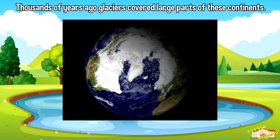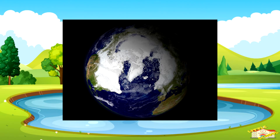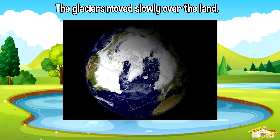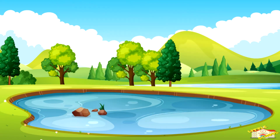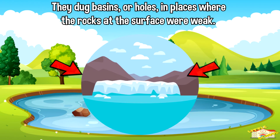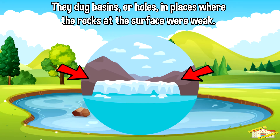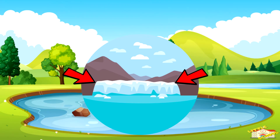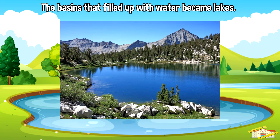Thousands of years ago, glaciers covered large parts of these continents. The glaciers moved slowly over land. They dug basins or holes in places where the rocks at the surface were weak. The basins that fill up with water become lakes.